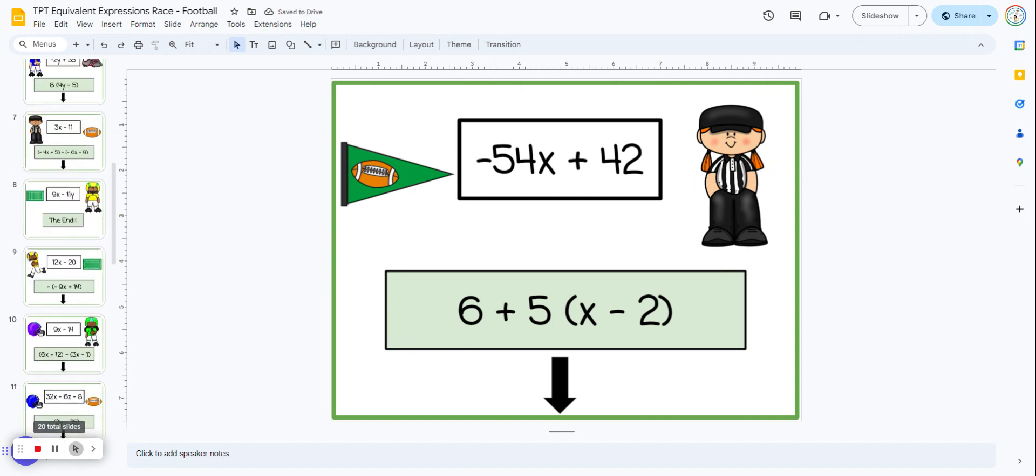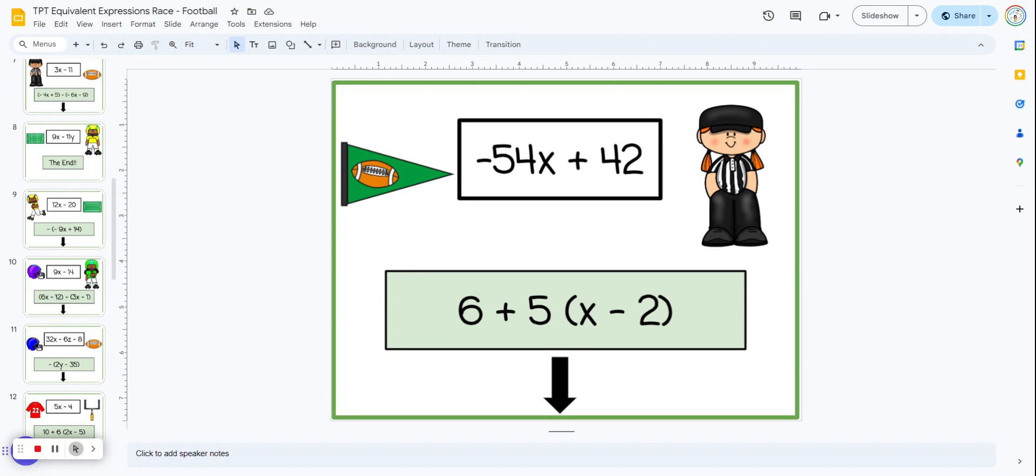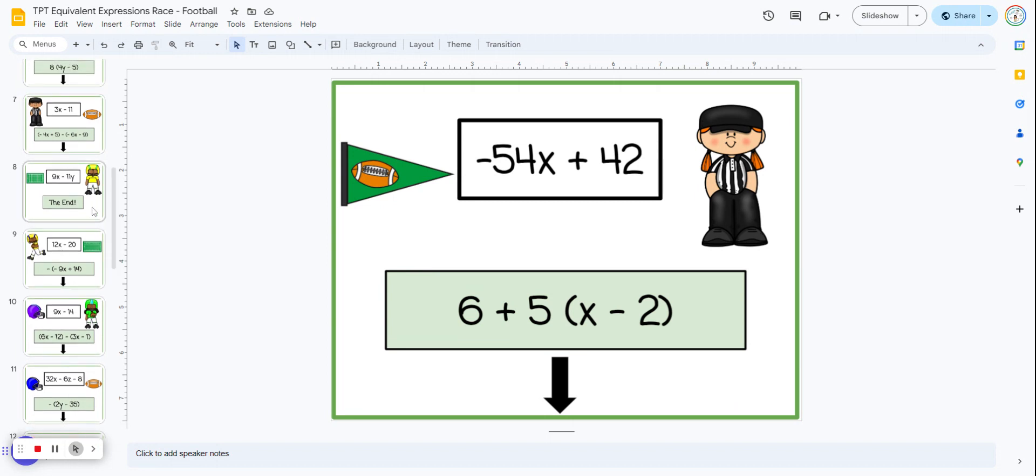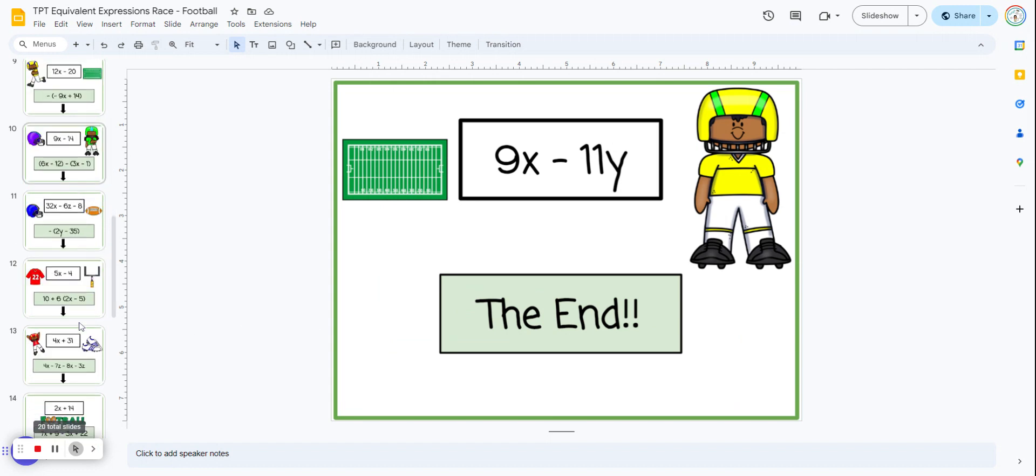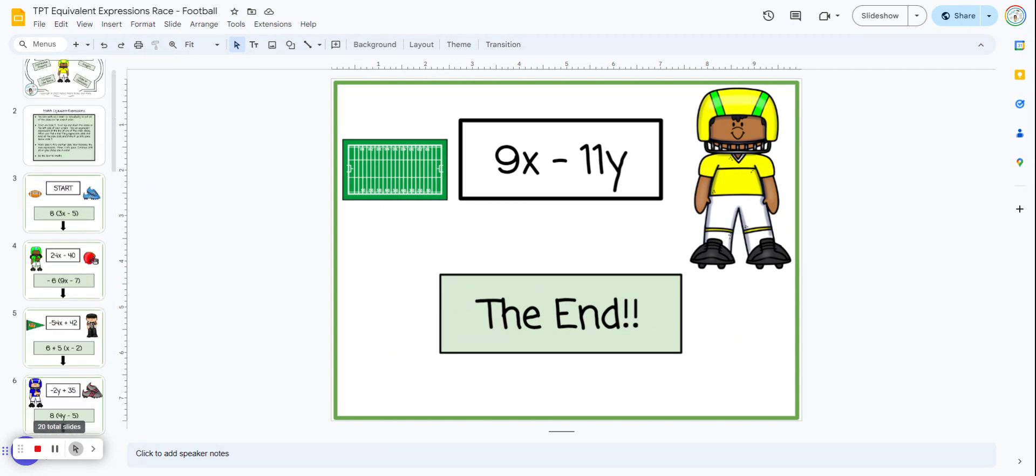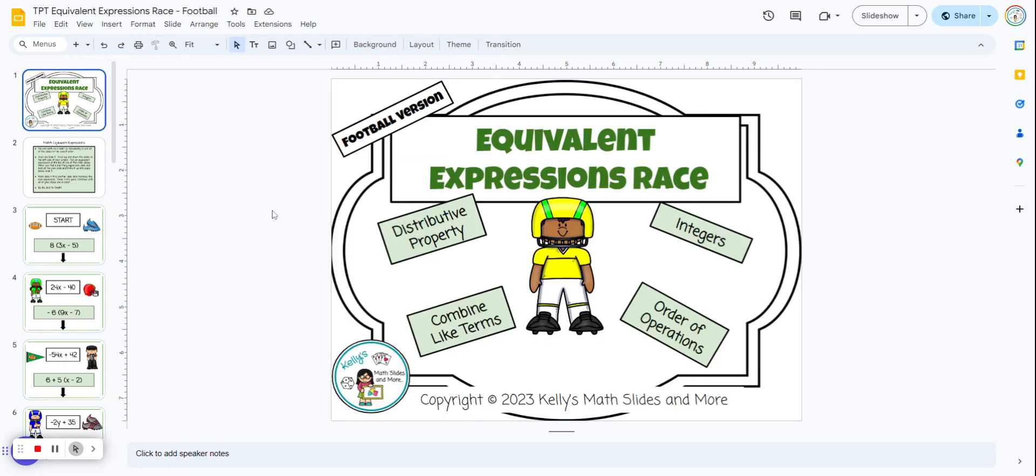Students are going to keep doing this until all of the slides are in the correct order. They're going to see how quickly they can put them in order. If they do it correctly, the very last slide will be the one that says the end. That is the equivalent expressions race, the football version.